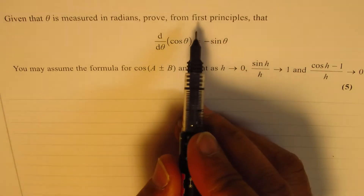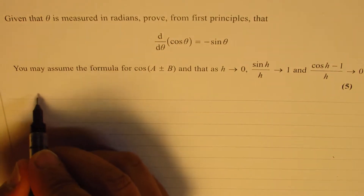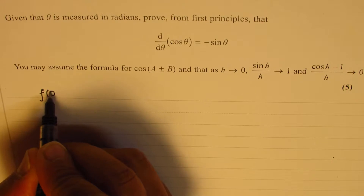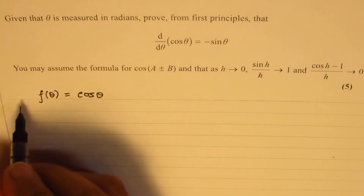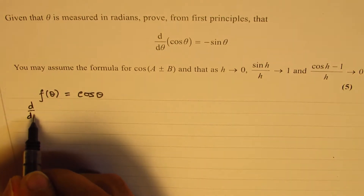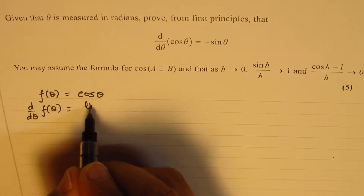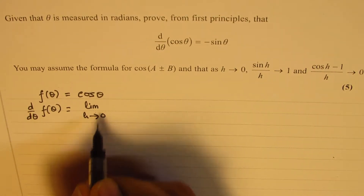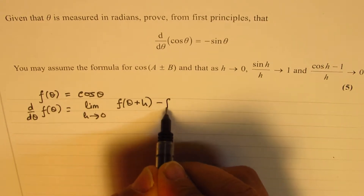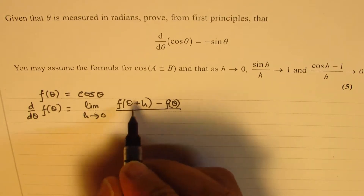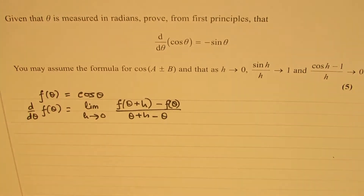Now, when we say use first principle, we use the very basic definition. Let's say that we are given the function f(θ) = cos θ. We want d/dθ of f(θ), and that is using the principles of limit as h approaches 0, for f(θ + h) minus f(θ) divided by (θ + h) minus θ. So that is the very basic definition.